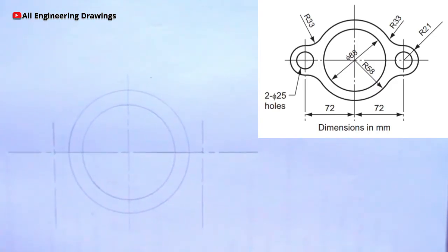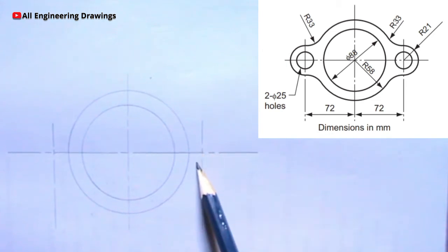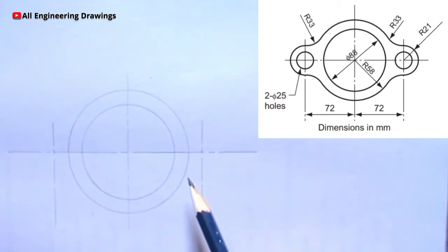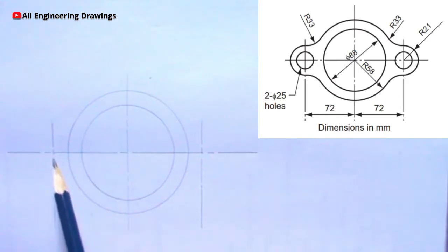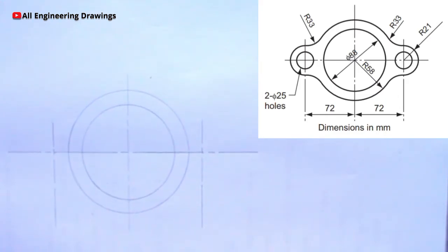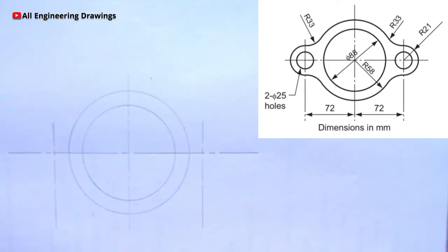From the question you observe that there is a circle here of diameter 25mm and there is also a circle here of diameter 25mm. That means the radius is 12.5mm. So I will adjust my compass to a radius of 12.5mm and produce these circles.